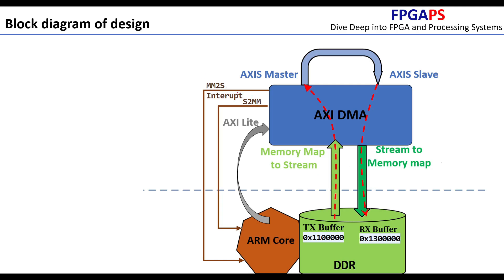The first interrupt is the Memory Map to Stream interrupt — it is asserted when the MM2S port completely transfers data from DDR to the AXI Stream Master. The second interrupt is the Stream to Memory Map interrupt. For example, if we configure 132 bits of data to transfer from the AXI Stream Slave to the Rx buffer, this interrupt is asserted when that job is done.